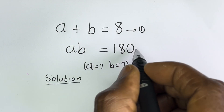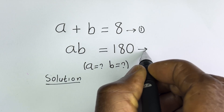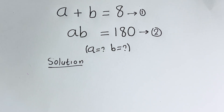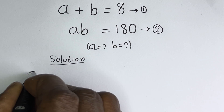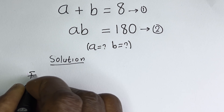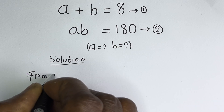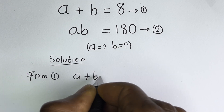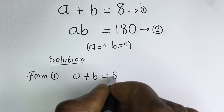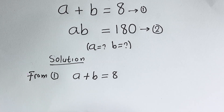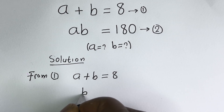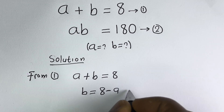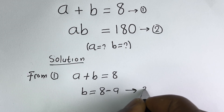AB is equal to 180 — let's call this equation 2. Then from equation 1, A plus B is equal to 8, so B is equal to 8 minus A. Let's call this equation 3.